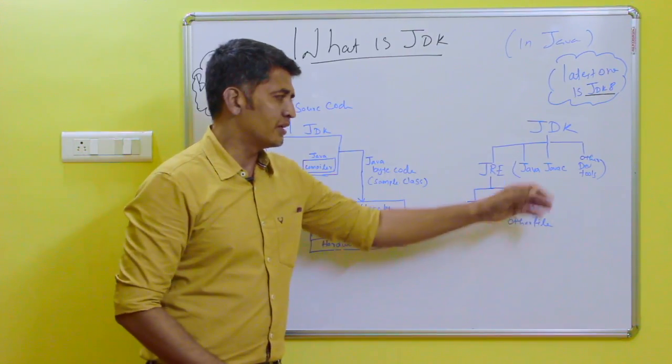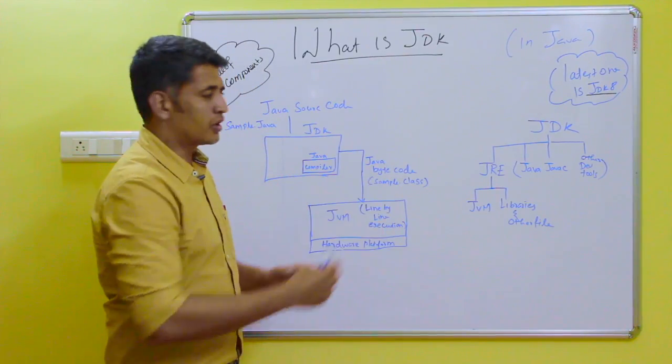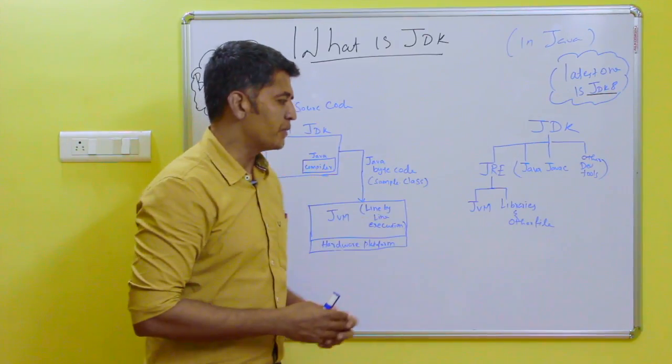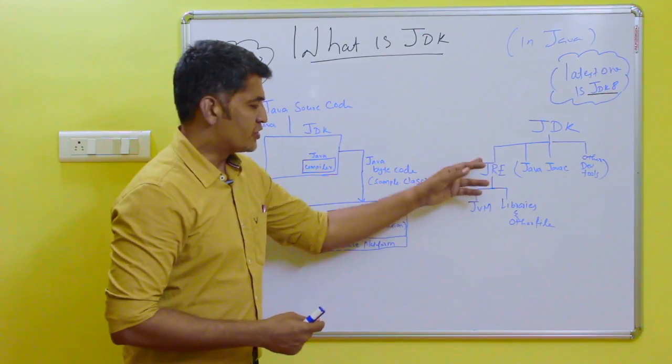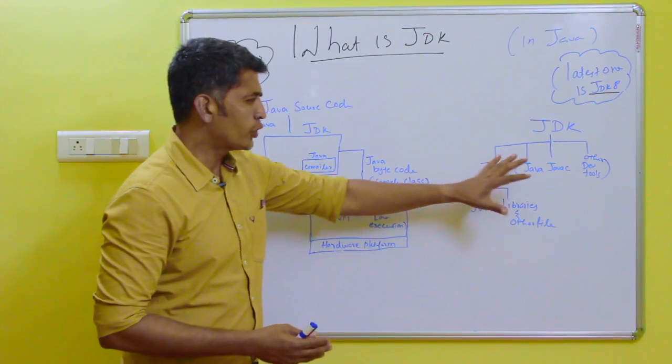One is JRE and other development tools. Java and JavaC, all these things combinedly may be called as development tools. And JRE is having JVM and other library files. This is JDK.